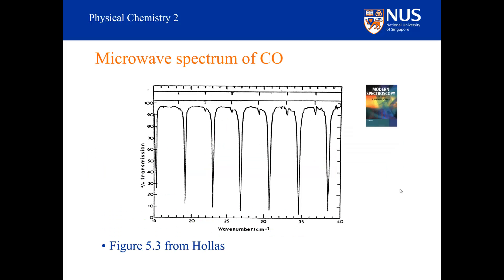Here is a typical spectrum that we might record for carbon monoxide. This figure comes from Hollis' modern spectroscopy. What features do you notice? Well, I hope that the first thing is that the spectral lines appear to be evenly separated. I should also point out here that we are measuring transmission and not absorbance. So when the transmission is small, it means that the sample is doing a lot of absorbing.